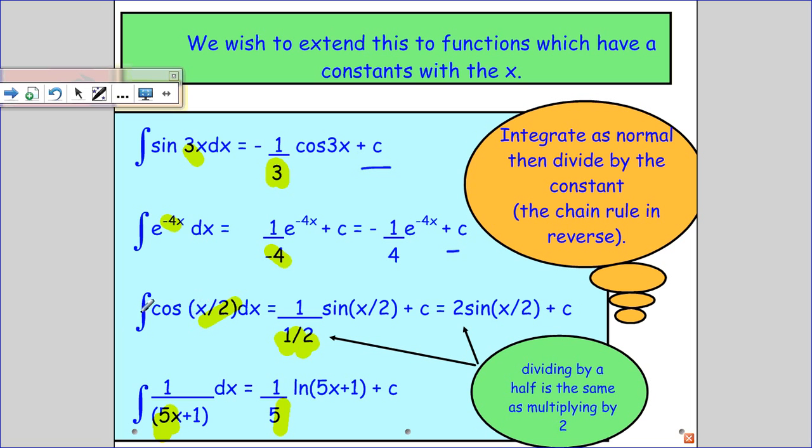Cos of x over 2, integrating that, is 1 over a half. And when you divide by the half, it's the same as multiplying by 2. So you don't need to write this extra step. You can just go straight to the 2 sine x over 2.